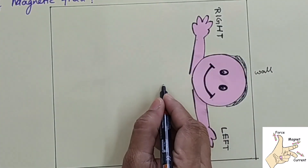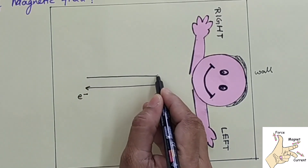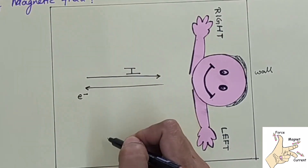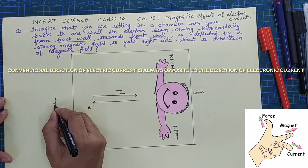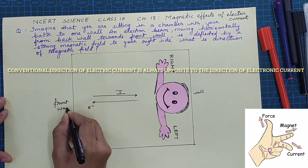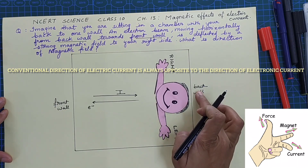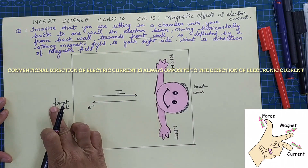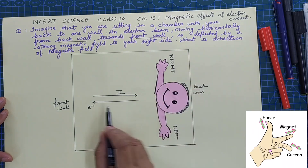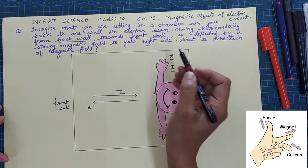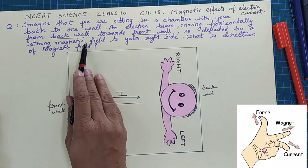If this is the direction of the electron beam, then exactly opposite to it is the direction of conventional electric current. So the direction of electric current is from the front wall to the back wall, by the conventional direction of electric current.